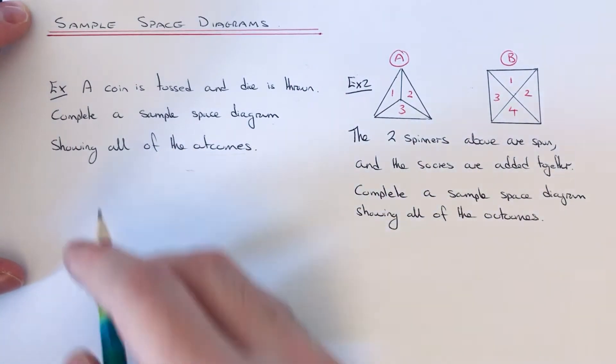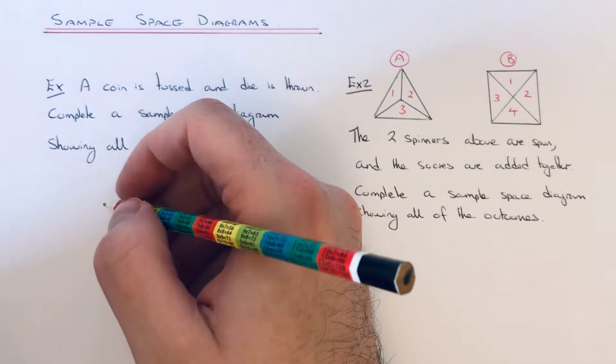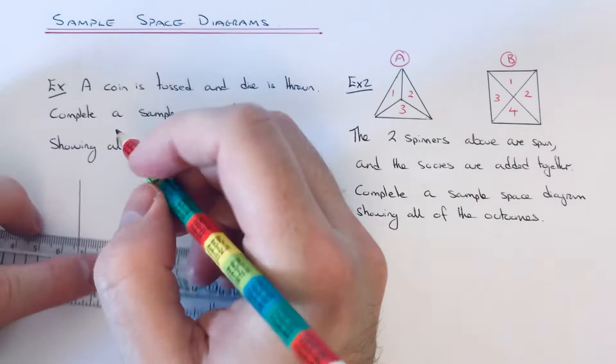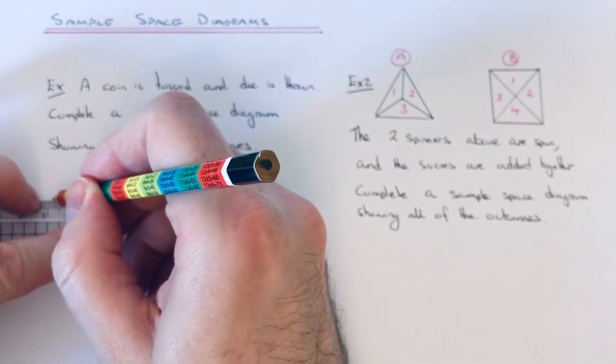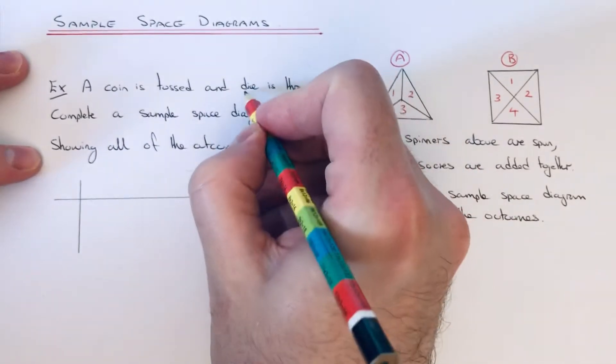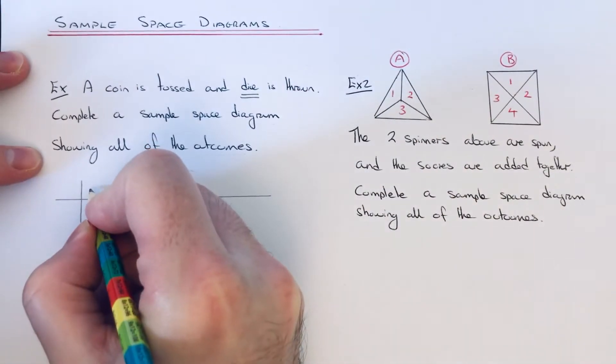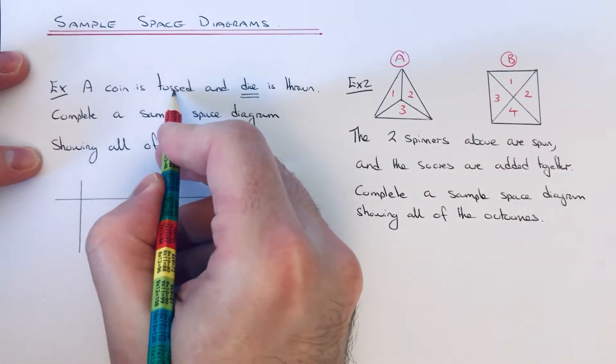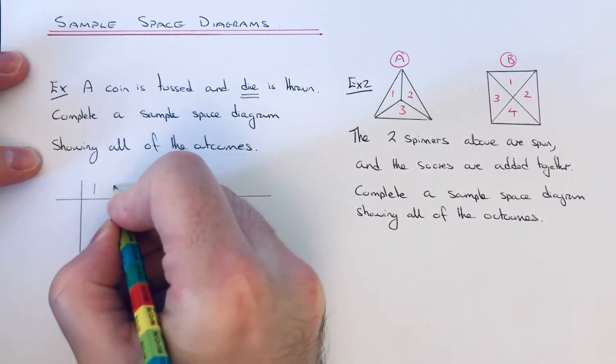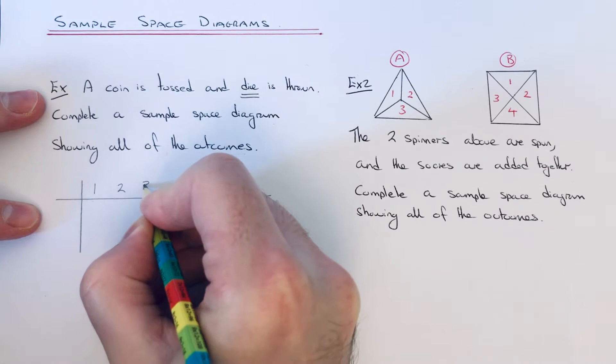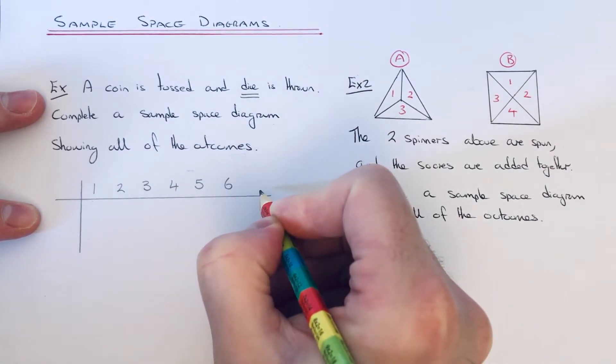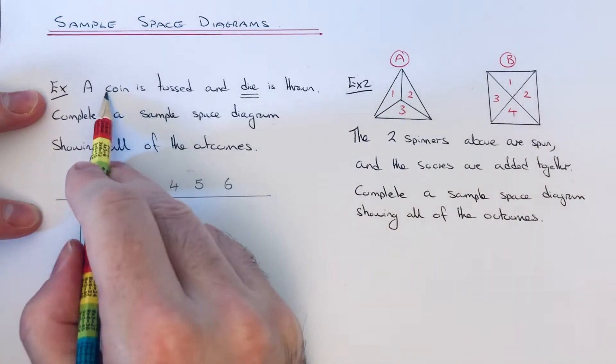Going across, I'm going to put the numbers on the dice. You could put the heads and tails along the top as well, it makes no difference. So I'm going to go with the numbers on the dice, and then the outcomes on a coin...